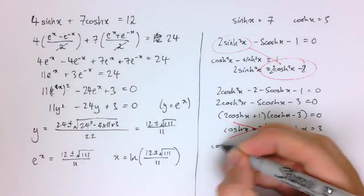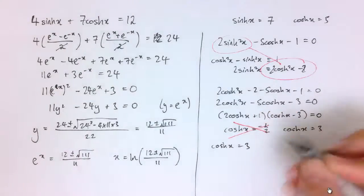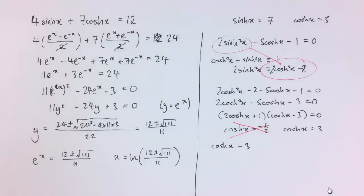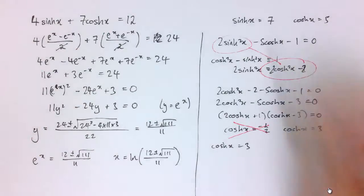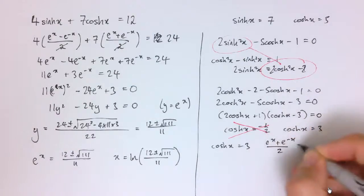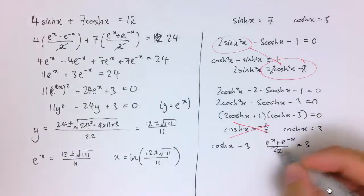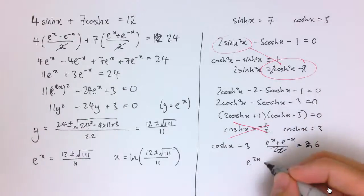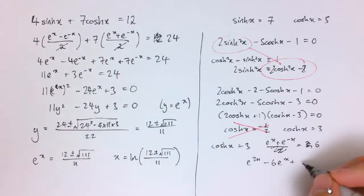And then the second one here, cosh(x) equals 3, we'll have to solve just as I said here. So if we rewrite this as e^x plus e^(-x) divided by 2 equals 3, multiply by 2 and then by e^x to get e^(2x) minus 6e^x plus 1 equals 0.